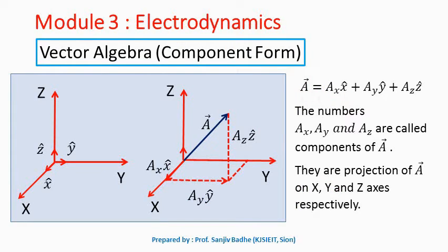Now let us understand how to write a vector in component form. Consider unit vectors x cap, y cap, z cap along the x, y, and z directions respectively. So x cap is the unit vector along x, y cap along y, and z cap along z direction. A unit vector is a vector having magnitude 1. A vector a bar drawn from the origin can be written as ax x cap plus ay y cap plus az z cap. The numbers ax, ay, az are called the components of vector a bar, and they are the projections of a bar on the x, y, and z axes respectively.